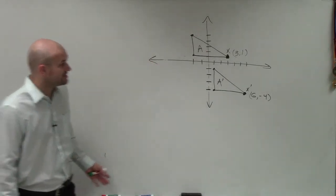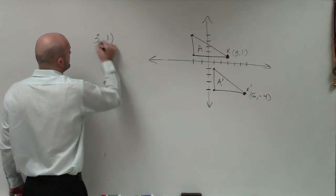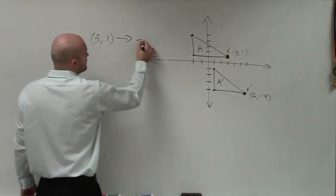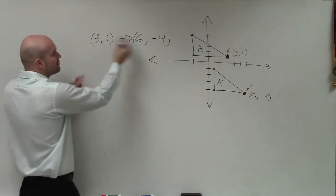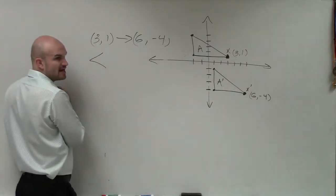All right. So the couple ways we can do this is, ladies and gentlemen, how do we go from 3 comma 1 to 6 comma negative 4? What is the transformation vector? From 3 to 6, what did we have to do? Add, subtract what?